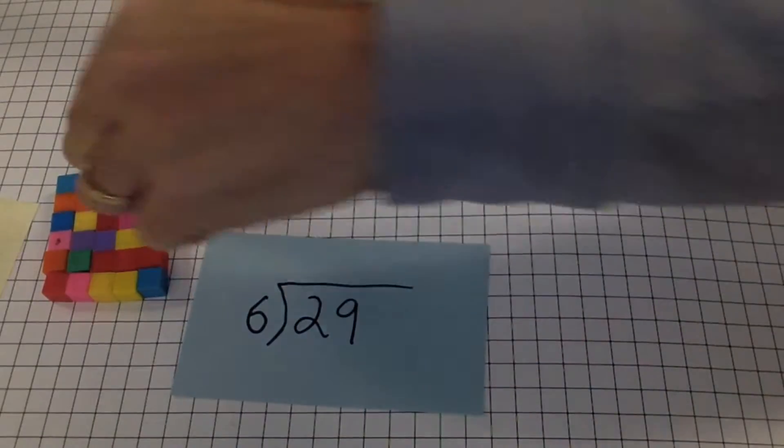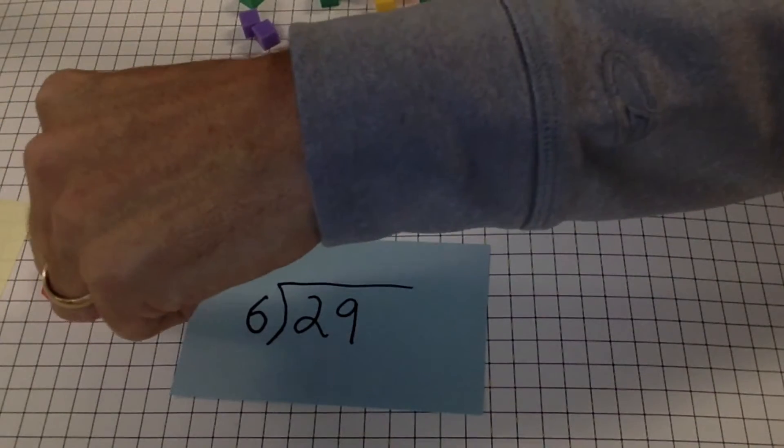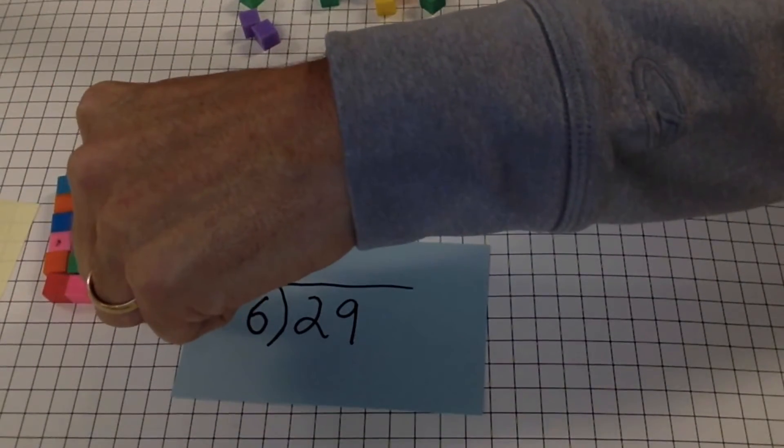We put 29 in rows of 6. How many whole rows of 6 did we get? 1, 2, 3, 4 whole rows of 6.